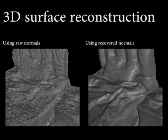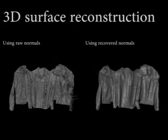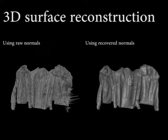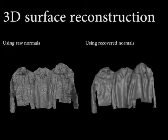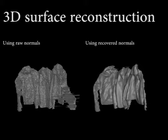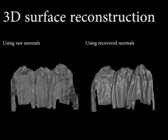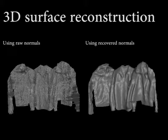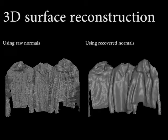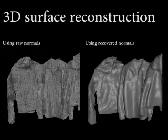We can even see the subtle details on the blanket, pillow, and t-shirt. This is the wardrobe example. As we zoom in, the crease on the jacket is visible.